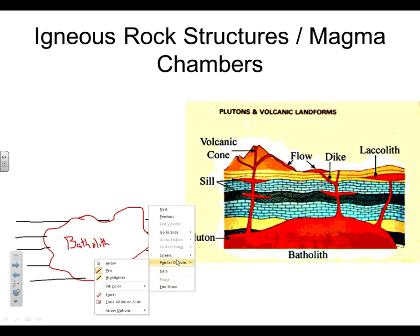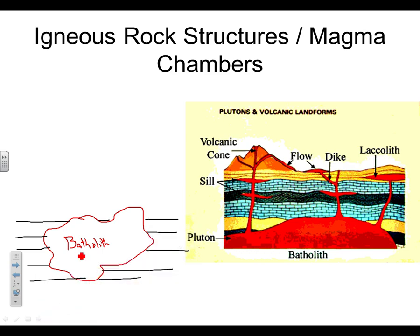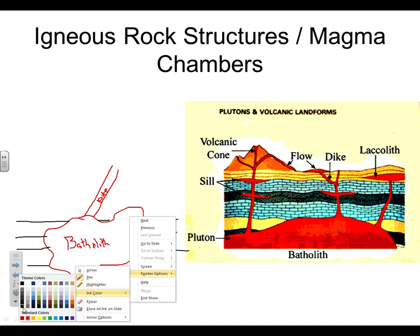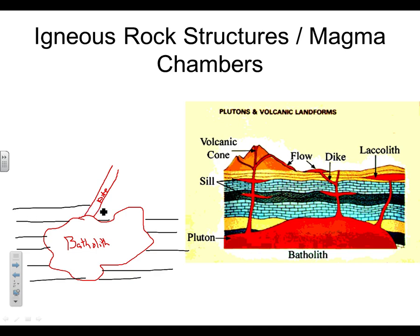The next magma chamber we're going to draw is a dike. I'll just put it coming out of the batholith, running up in this direction. Label it dike, spelled D-I-K-E. A dike is just a tube or a sheet that cuts across the rock layers, or cuts through the rock layers. We see this dike is cutting across the rock layers — it melts its way through them.